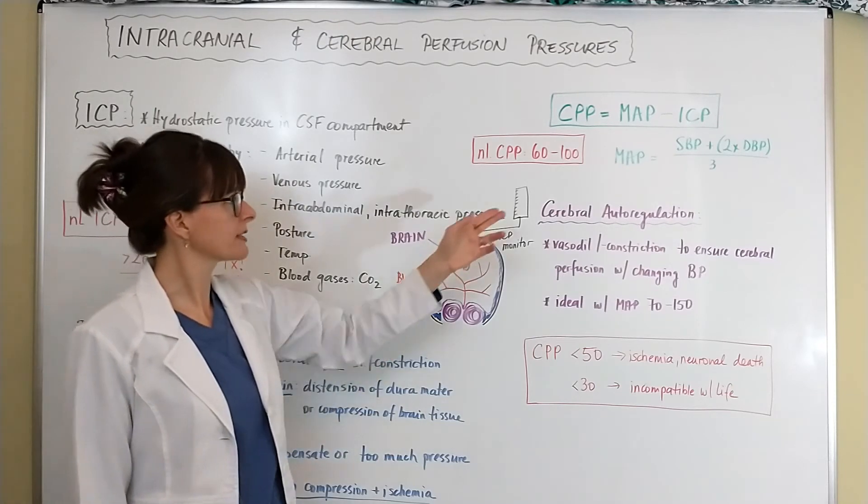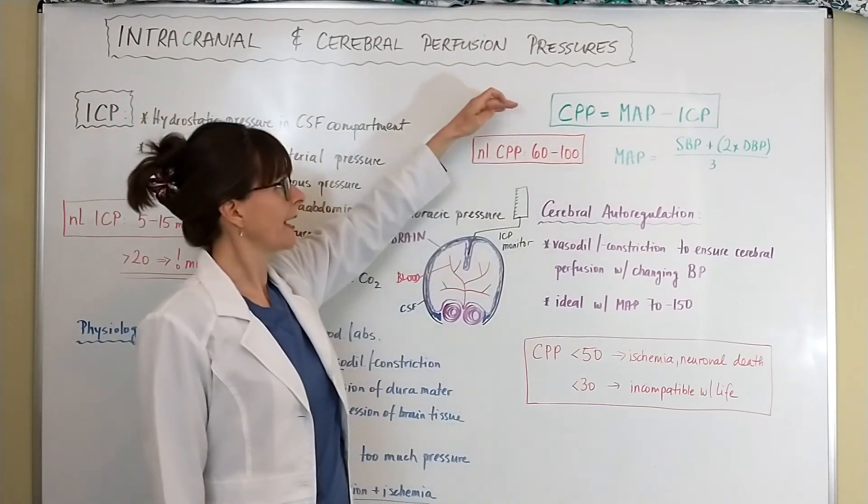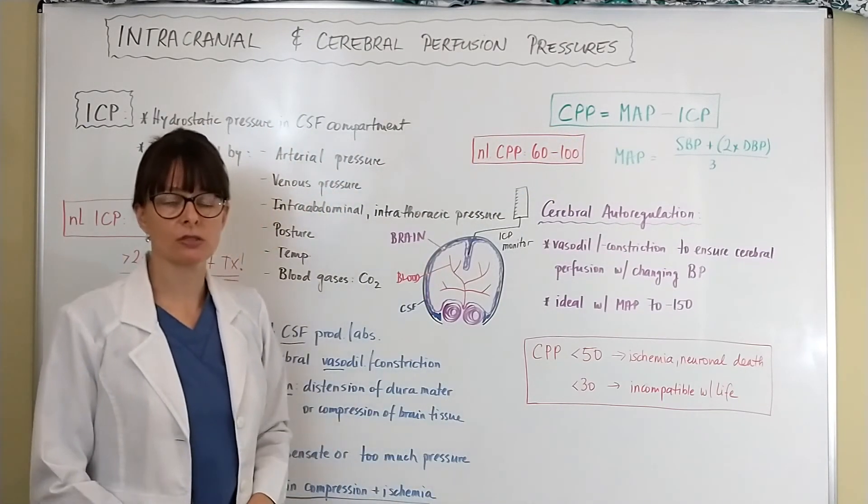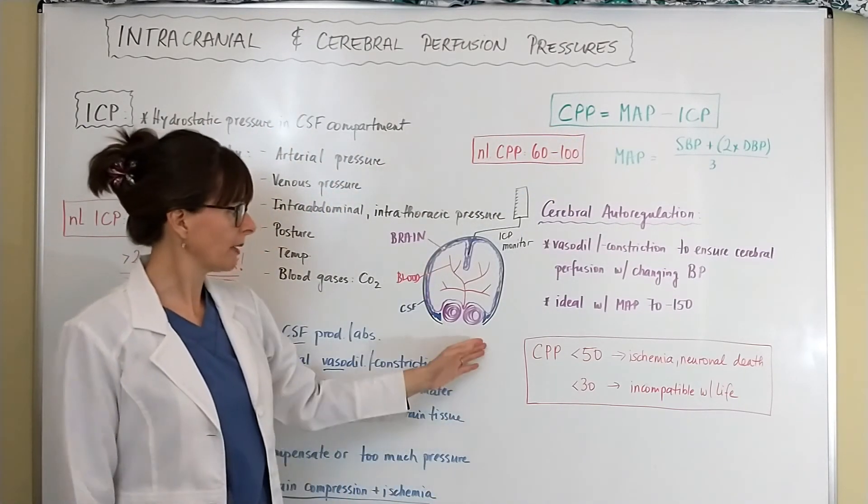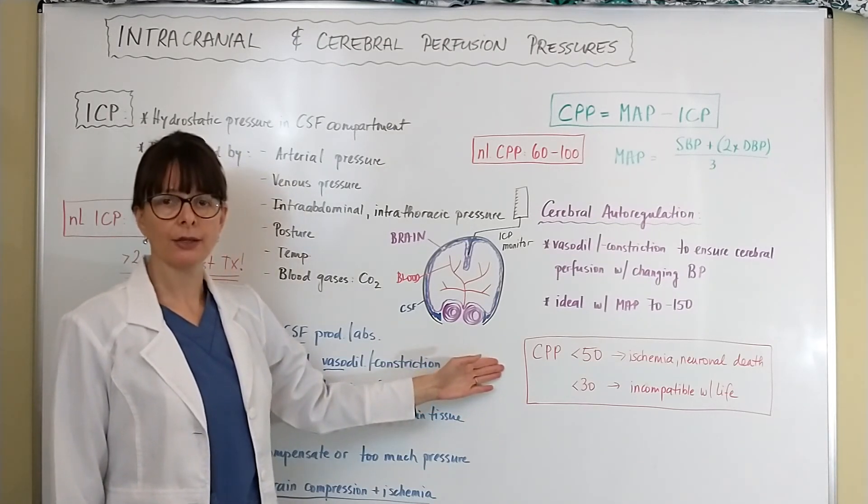So now we have the two components that we need: we have the mean arterial pressure, we have the ICP, and now we can calculate the patient's cerebral perfusion pressure and then make adjustments as needed to prevent the ischemia and neuronal death that might lead to the patients being brain dead.